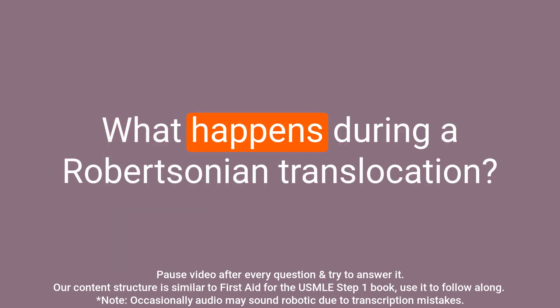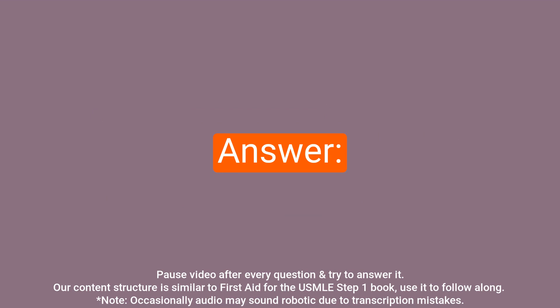Question: What happens during a Robertsonian translocation? Answer: During a Robertsonian translocation, the long arms of two acrocentric chromosomes fuse at the centromere while the short arms are lost.